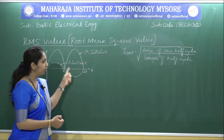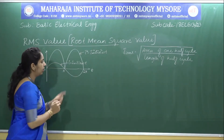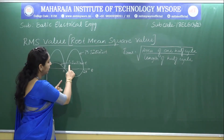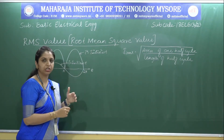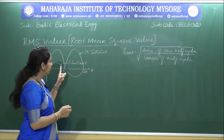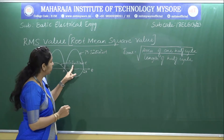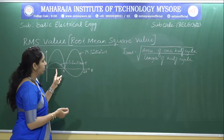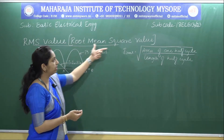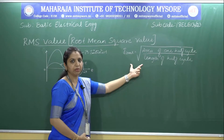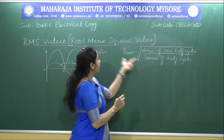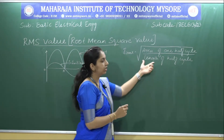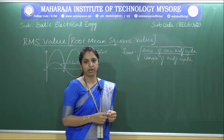Considering the alternating quantity as alternating current (AC), we represent it as i = I_M sin(ωt), as derived in the generation of alternating quantity. The instantaneous current is represented as i = I_M sin(ωt), where I_M is the peak or maximum current. Since we have root mean square, we express I_RMS as the square root of the area of one half cycle divided by the length of the half cycle — that is, the average value of the squared current.